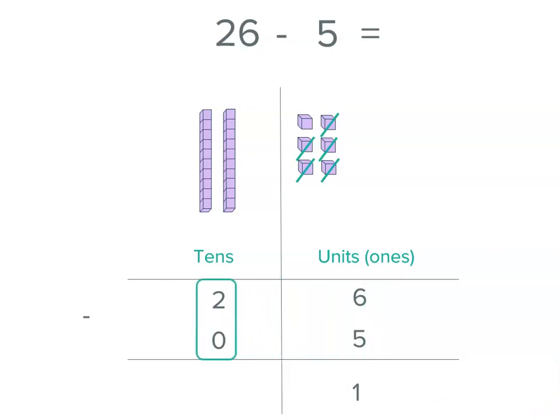Now, what we do is we move left and look at the tens. Now, we don't actually need to subtract any. So we had 2 at the start, and we've still got 2. It's like 2 minus 0, which is 2.